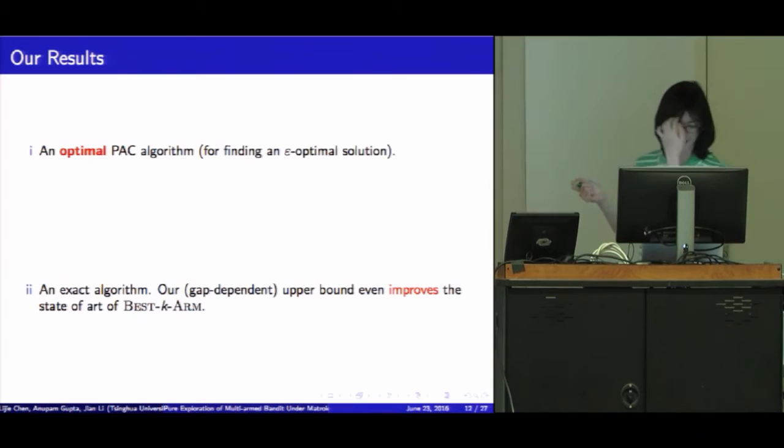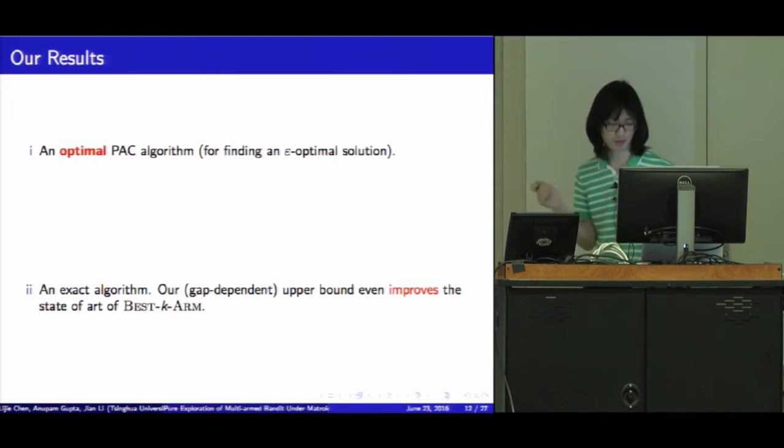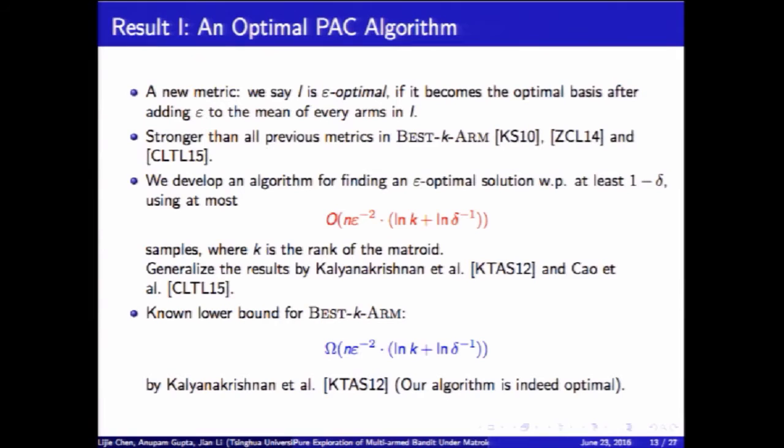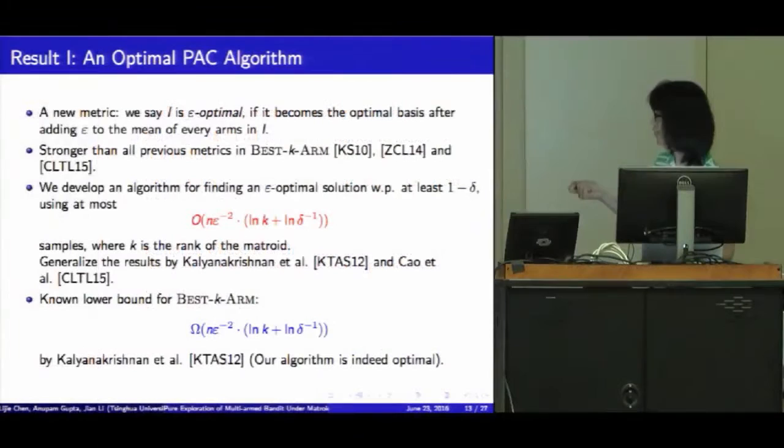Now let's talk about our results. We show an optimal PAC algorithm for finding an epsilon-optimal solution. We need to introduce a new metric. We say solution i is epsilon-optimal if it becomes the optimal one if we're adding epsilon to the means of every element in i. It's stronger than all the previous metrics in the best k-arm in these three works. We developed an algorithm for finding an epsilon solution with probability at least 1-minus-delta using this amount of samples. It matches the lower bound given by prior work. So our PAC algorithm is indeed optimal.